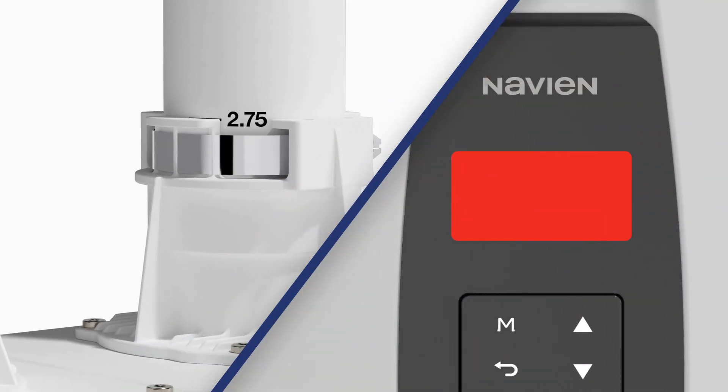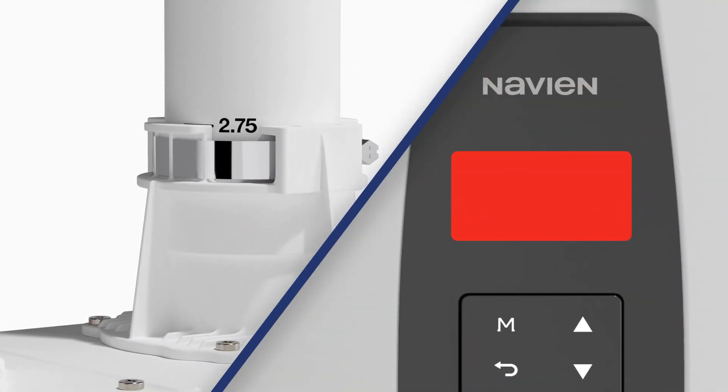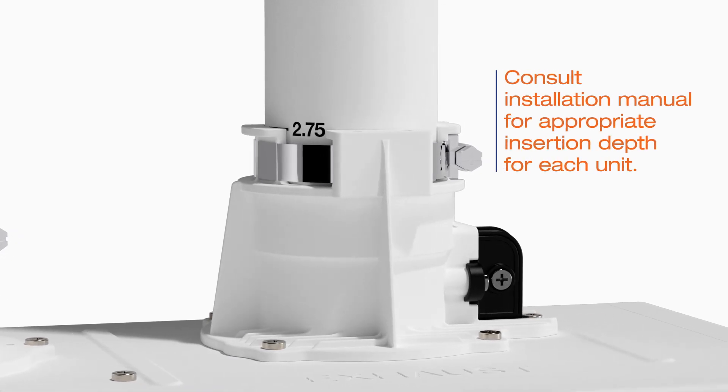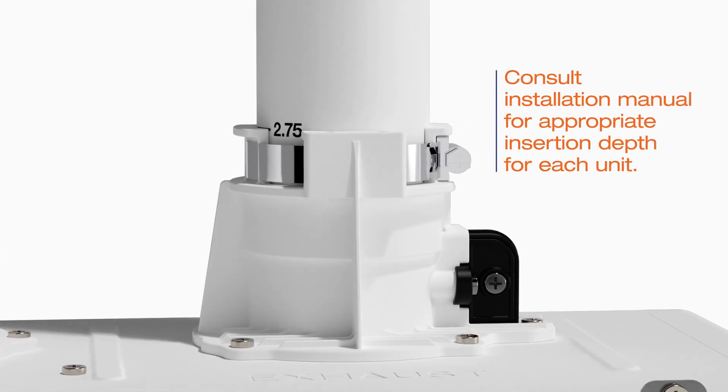If the pipe is not inserted at a sufficient depth, an error code will flash on the control panel. Use the mark on the pipe to verify that the correct length of pipe is fully inserted into the collar.